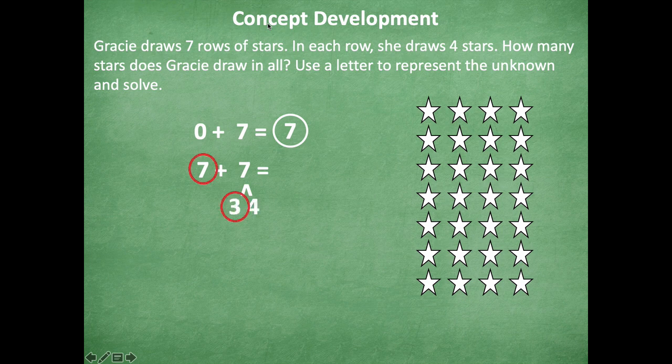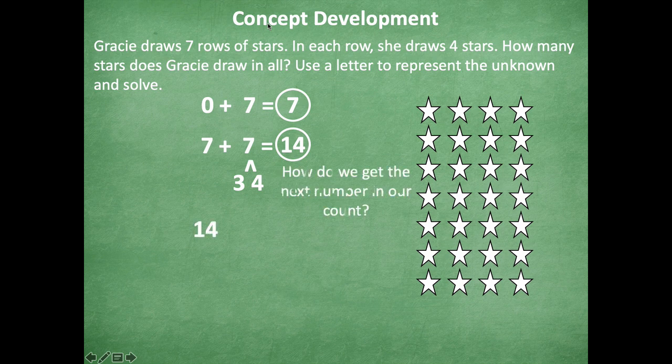So I can break apart this seven into a three and a four, because I know that seven and three make ten, and then ten plus four is fourteen. Okay, now we're at fourteen, how do we get to the next number in our count? Add seven. So I can break this apart into a six and a one, because I know that fourteen plus six make twenty, plus one is twenty-one.